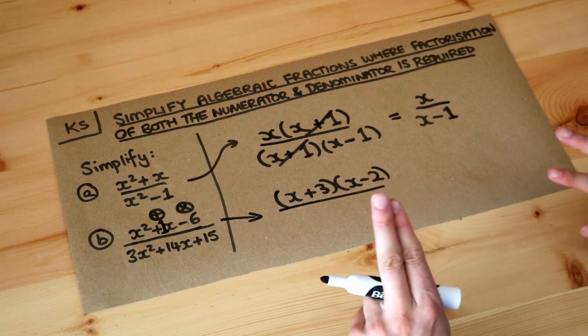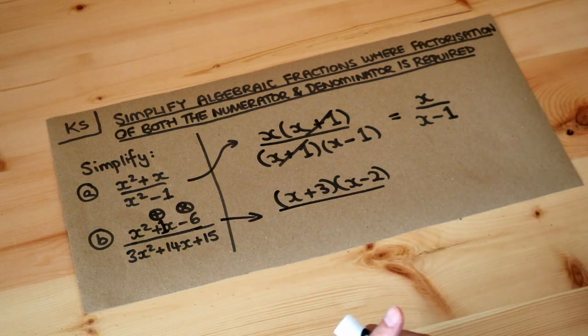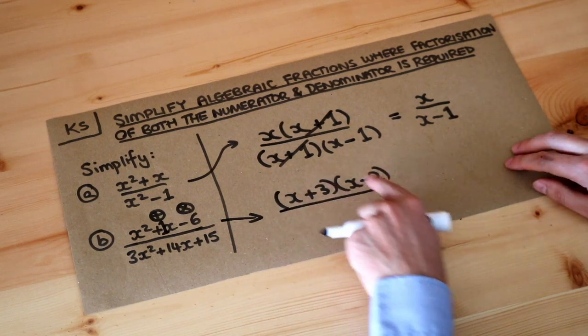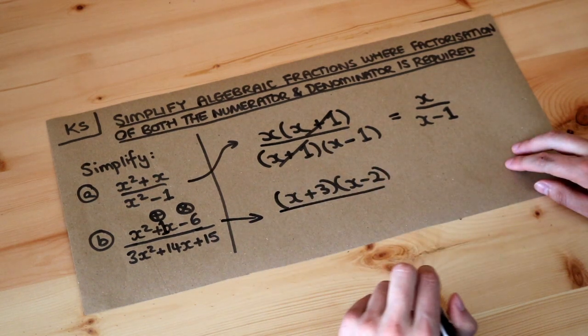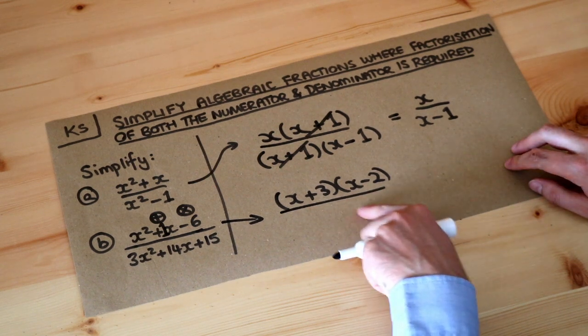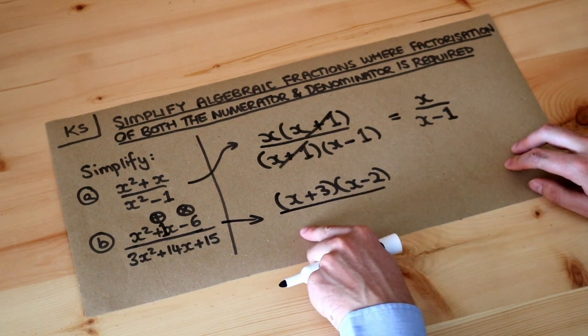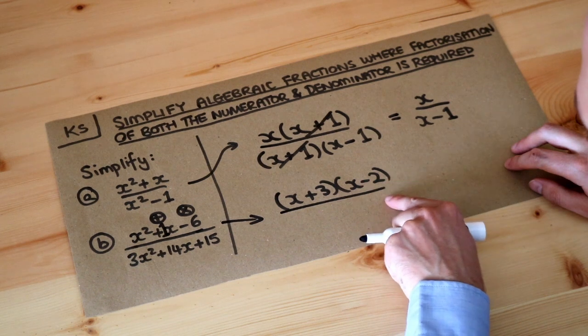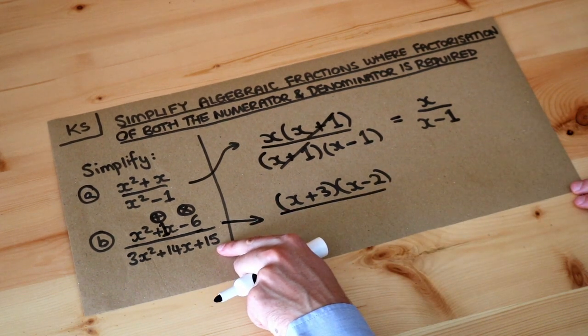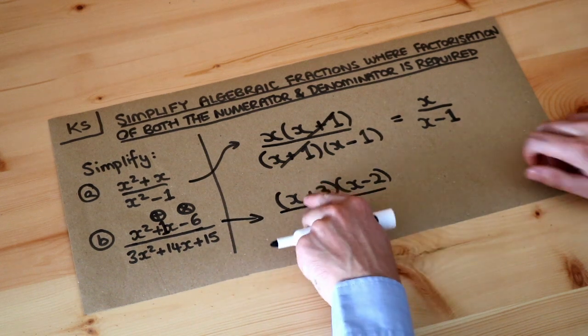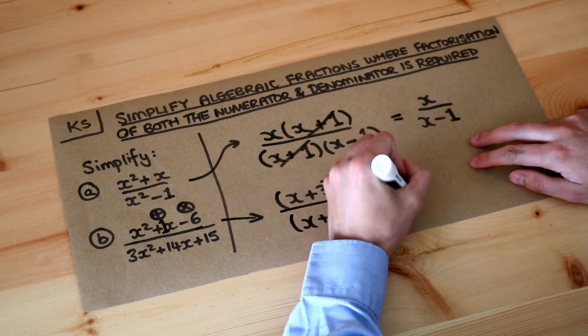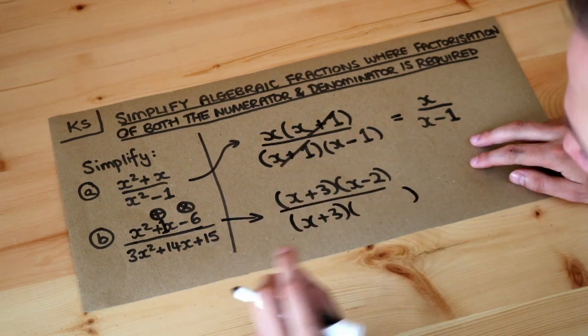Now my guess is that because we know that this is going to simplify, otherwise it would be a rubbish question, one of these things is probably going to appear at the bottom so that it cancels. Now it can't be the x minus two at the bottom, because if I did x minus two times by something else, when I do that minus two times something in the expansion, there's no way it can give you 15 because it won't be a whole number. So it must be the x plus three, so I've got x plus three multiplied by something, because three times something can give you 15.